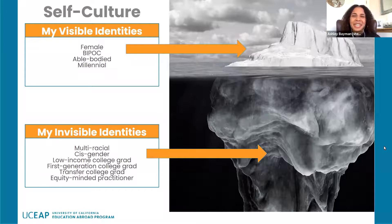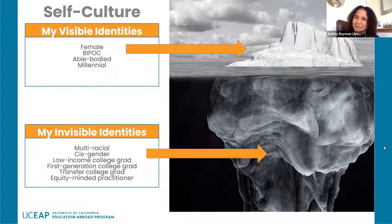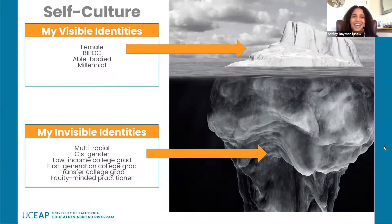Looking at my own cultural iceberg, as part of my visible identities, you might be able to tell that I am BIPOC, female, and able-bodied. While I am no spring chicken, I also hope I don't look over 50, which would place me in the millennial generation. However, invisibly, you may not be able to tell that I'm actually multiracial, coming from a mixed race household. You might not infer that I am cisgender, and some other aspects you might not immediately guess are that I am low income, first generation, and a transfer college student — and those lived experiences led me to be an equity-minded practitioner.